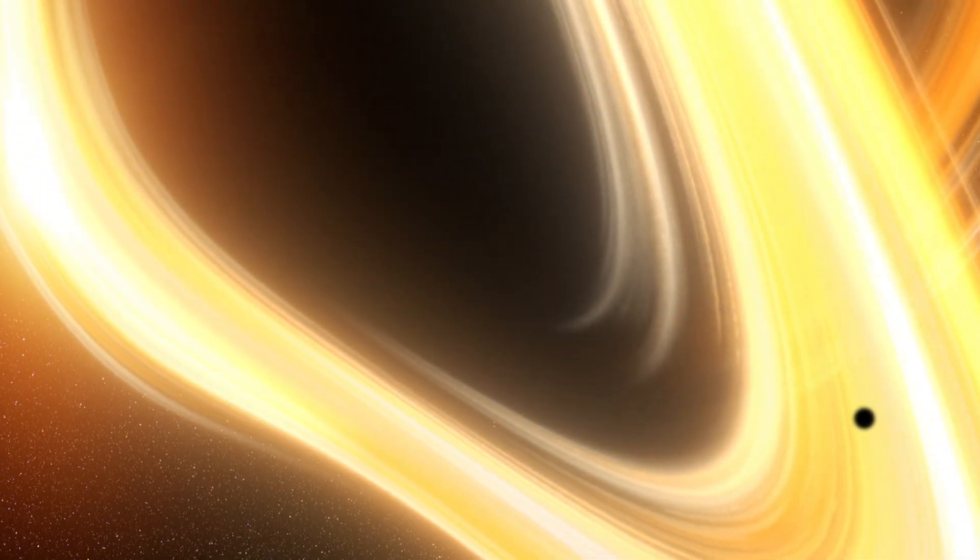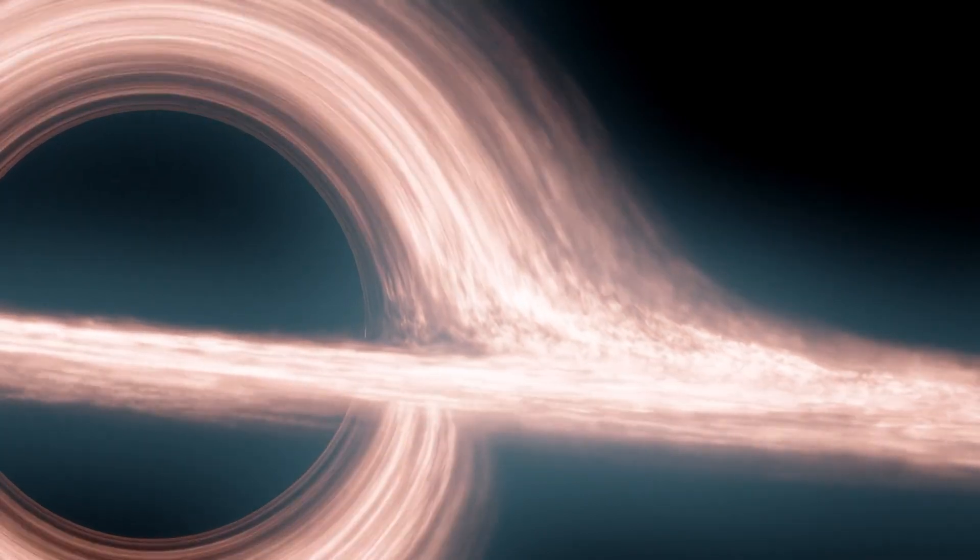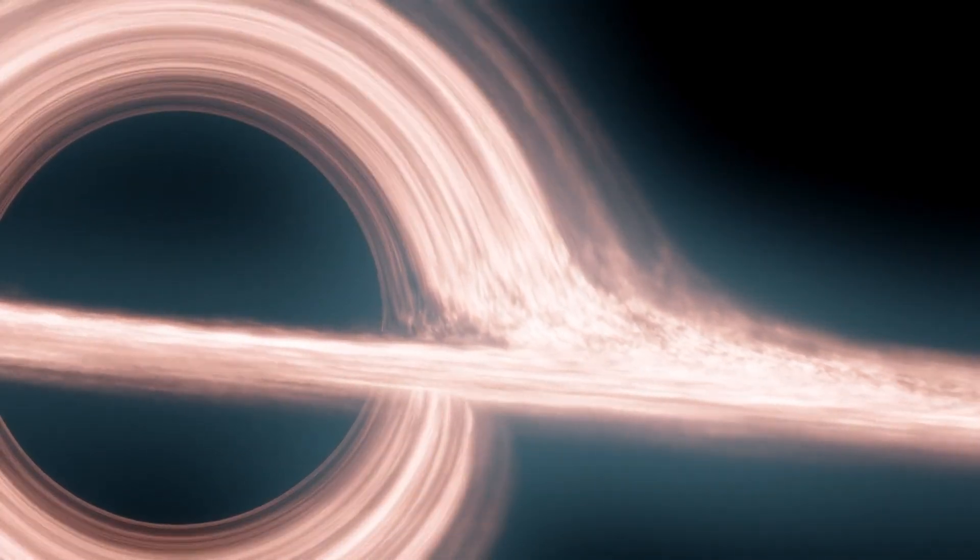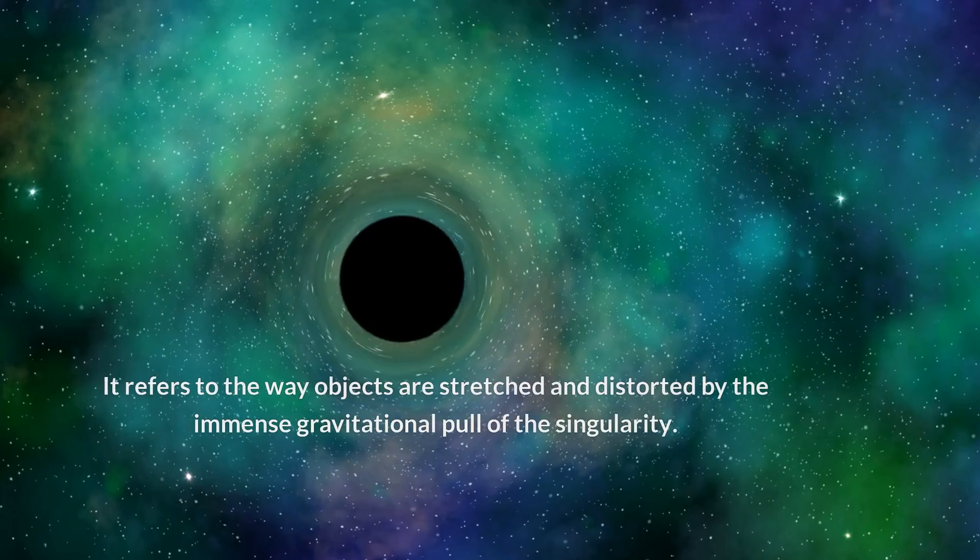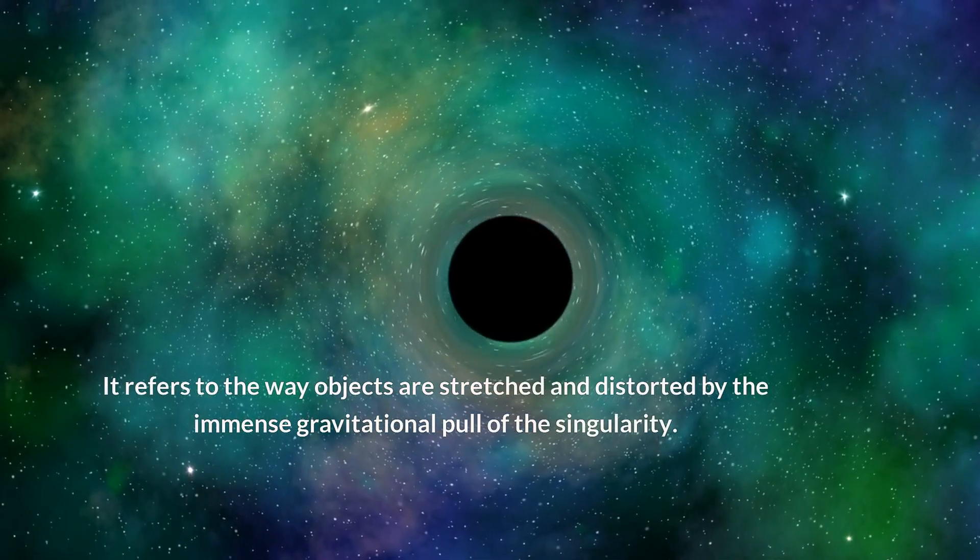Inside the event horizon, things get even stranger. As you fall towards the singularity, you would experience what's known as spaghettification. This is a real scientific term, by the way. It refers to the way objects are stretched and distorted by the immense gravitational pull of the singularity.